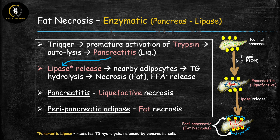This damage leads to premature activation of trypsinogen to trypsin while still within the pancreas. Trypsin itself is a very potent digestive enzyme that starts damaging the pancreatic tissue, and it also activates the other digestive enzymes, leading to autolysis — damage of the pancreatic tissue itself. This is pancreatitis, which is a type of liquefactive necrosis. The dying pancreatic cells release pancreatic lipase, which travels to the nearby adipocytes and causes necrosis as well as hydrolysis of triglycerides and free fatty acid release.